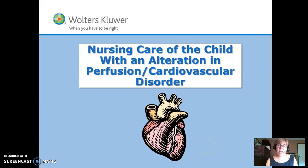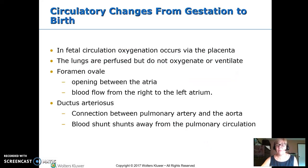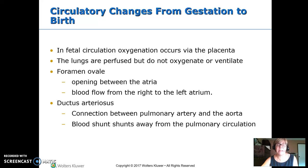This is Nursing Care of the Child with an Alteration in Perfusion or Cardiovascular Disorder, Part 1. We need to remember those changes that happen from fetal circulation. In utero, oxygenation happens at the placenta, not at the lungs, and so the fetal circulation is designed to bypass the lungs — just send enough blood to the lungs for growth, not for oxygenation.